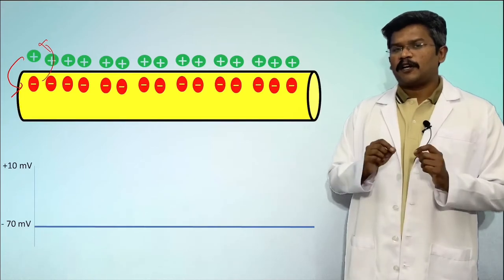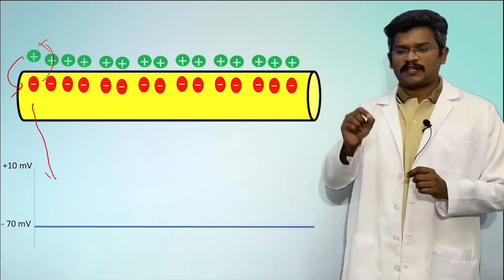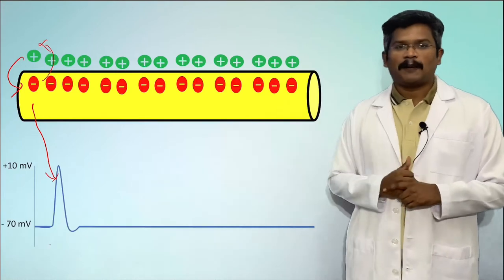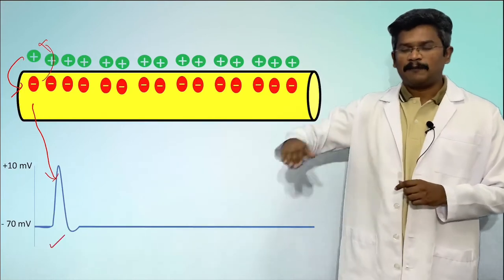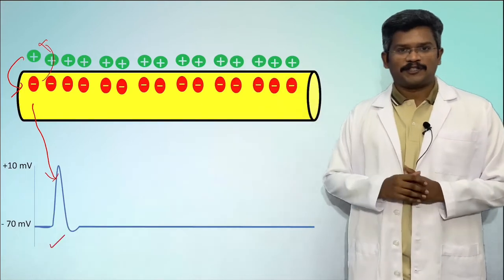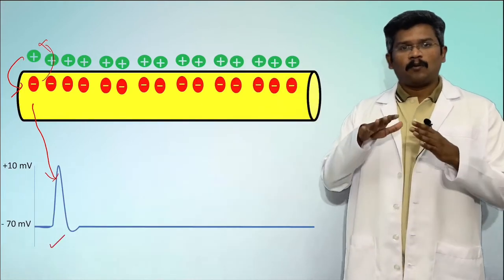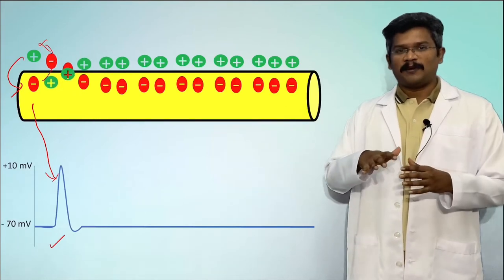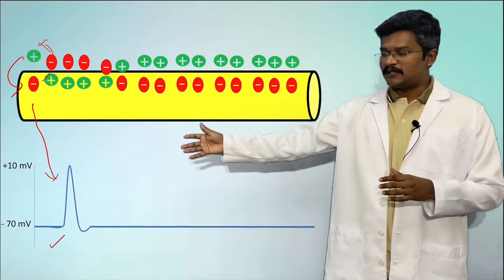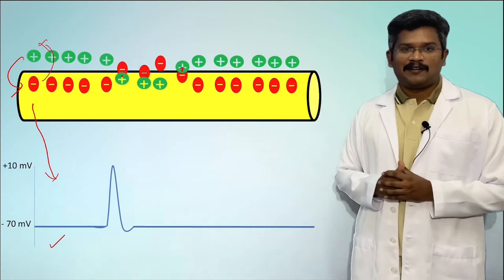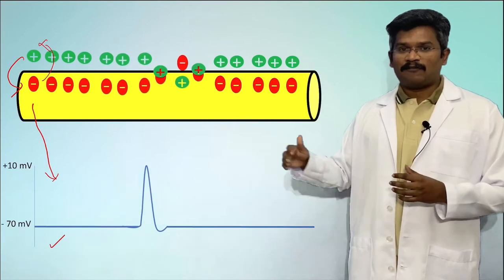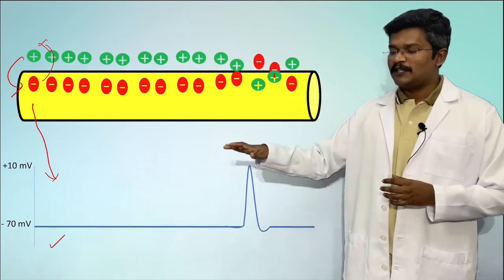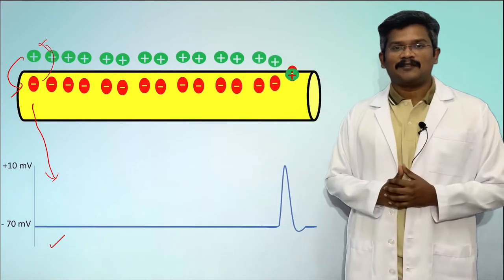If we record these potential changes at a given point on a cell membrane, we would record a spike — a depolarization followed by a repolarization. Once the action potential is initiated at one point on the membrane, it spreads along the cell membrane as a wave of depolarization followed by repolarization.